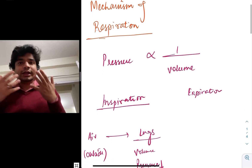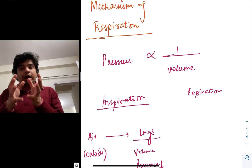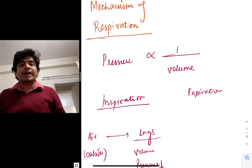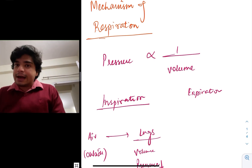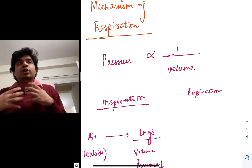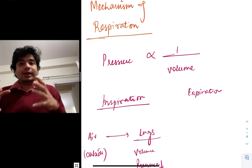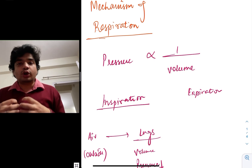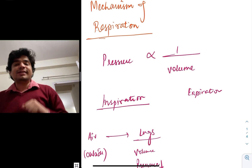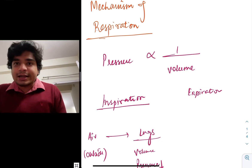During inspiration, we want the air to get inside the lungs and the lungs to expand with air — when the lungs expand, the volume will increase. But can the lungs expand on their own? No. Lungs by themselves do not have an expanding capacity, but lungs are situated inside the thoracic cavity, and the thoracic cavity is an airtight chamber.